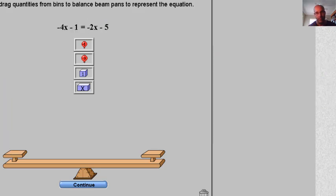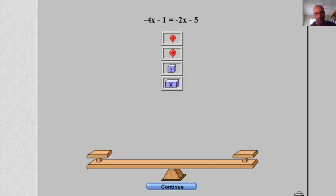Let's look at a slightly more difficult one now. Here we've got another one with terms on both sides. You can see we have negative 4x minus 1 equals negative 2x minus 5.